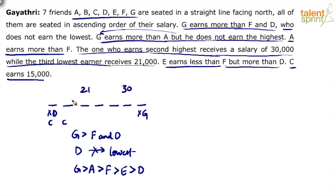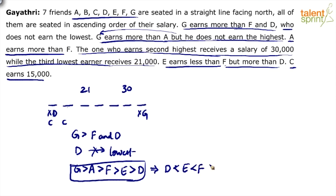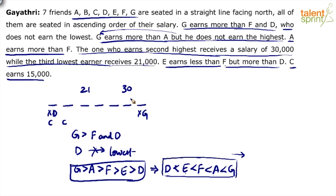Now let us fill the gaps. We need ascending order, so reversing our chain gives us: D less than E, less than F, less than A, less than G — that's 5 persons whose order is known. G is towards the right-hand side but cannot come in the rightmost position, and D cannot start. So we fill 5 intermediate positions as D, E, F, A, G. Since the second position is now filled, C has to come in the first position. B is left out and comes in the last position. That's the arrangement.